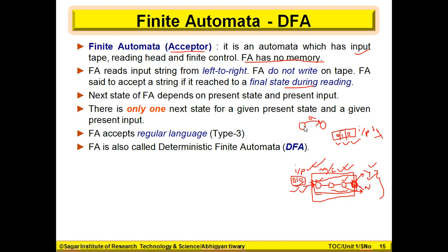Let's suppose this is a state Q. After providing input A, we will move towards state T. There is only one next state for a given present state and a given present input. In a state, if we are giving an input, we will have exactly one next state.